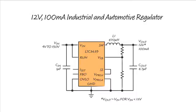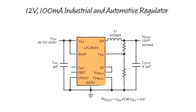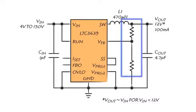Here is an example of the LTC3639 in an industrial or automotive application. A resistor divider has been added to externally program the output voltage to 12 volts, and the ISET pin is floating which programs the output current to 100 milliamps.